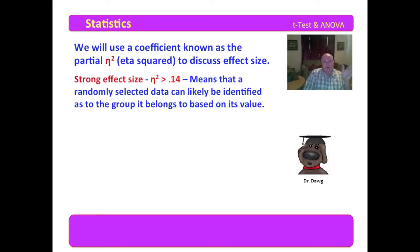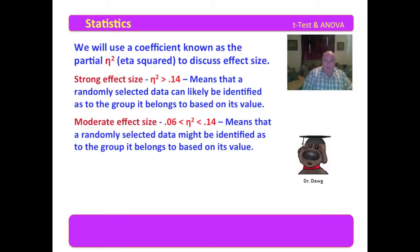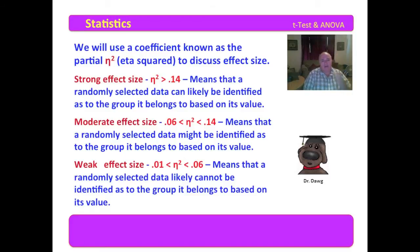A strong effect size, which is eta squared greater than 0.14, means that if we go in the samples and we're comparing two groups or three groups, and we select a value at random, a strong effect size means that it is very likely that we can look at that data point based on its value and determine which group it belongs to, because the distances between the groups were so profound. A moderate is between 0.06 and 0.14, and that means that if we randomly select a data point, it might be identified as to the group which it belongs based on its value. And a weak is between 0.01 and 0.06, and that means that it's not likely that we would be able to take that data point and look at its value and determine the group that it belongs to.